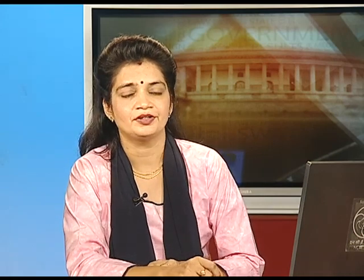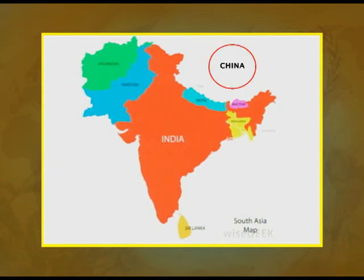Bhutan is the closest country with which India has the most friendly relations. The bilateral relations between India and Bhutan have been very cordial and close for a long period of time. Bhutan is landlocked and to a large extent economically dependent upon India. Bhutan shares almost 600 kilometers of border with India and has great geographical and socio-cultural proximity with India. As you can see in this map, Bhutan is shown in pink color and is surrounded by Indian territory from three sides, with China on its northern side.